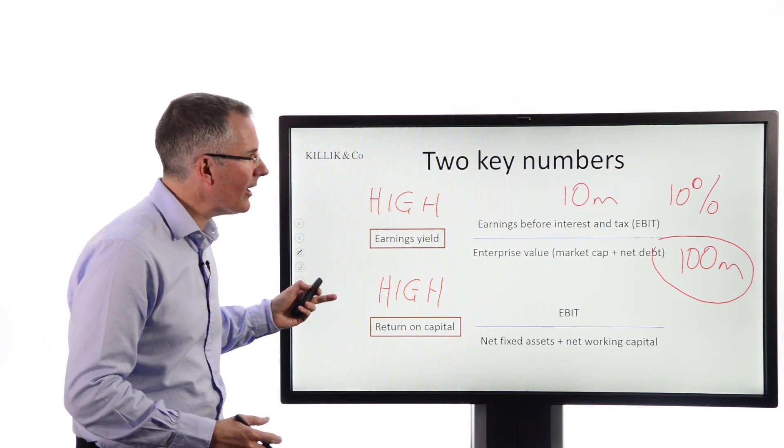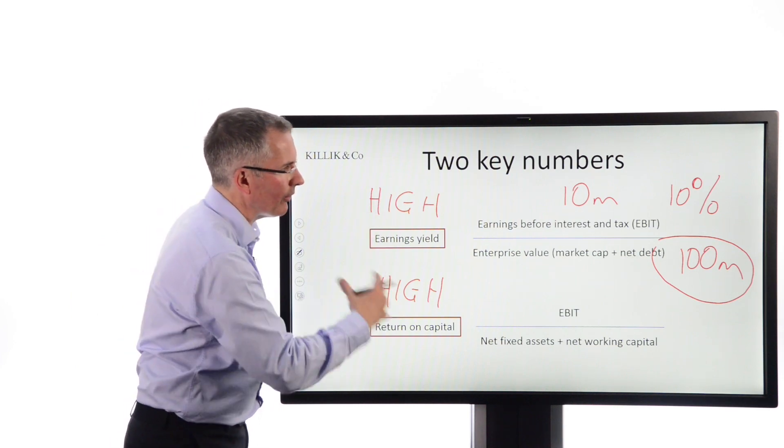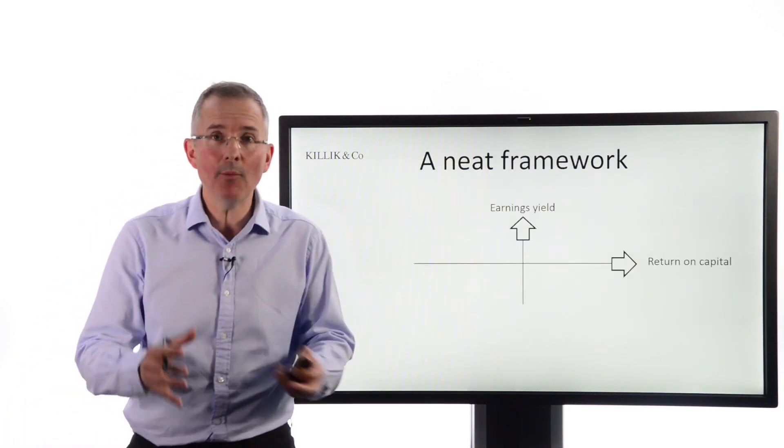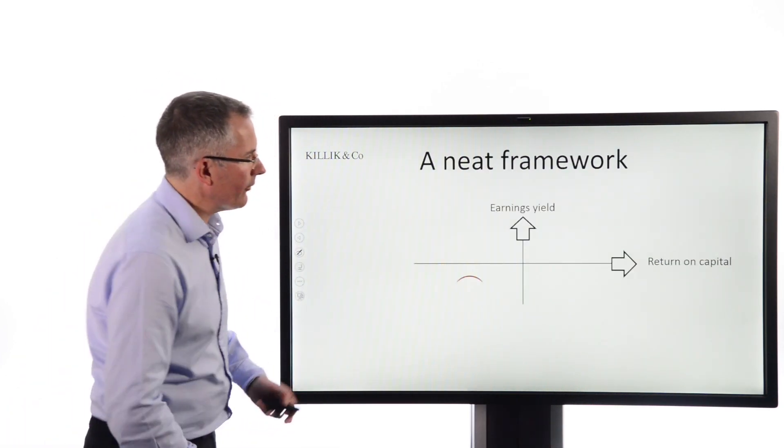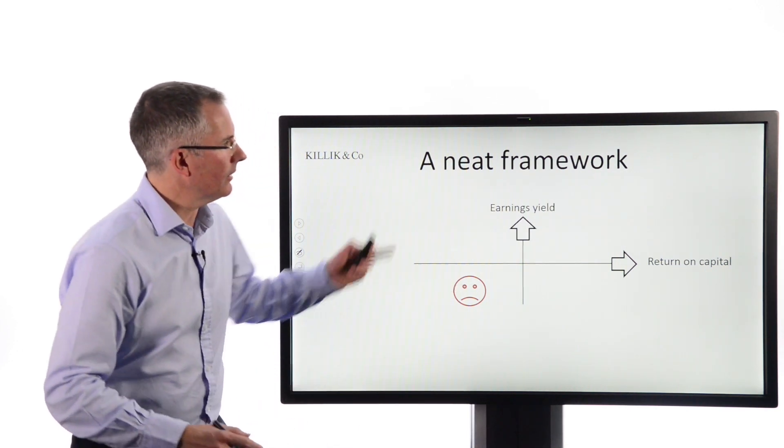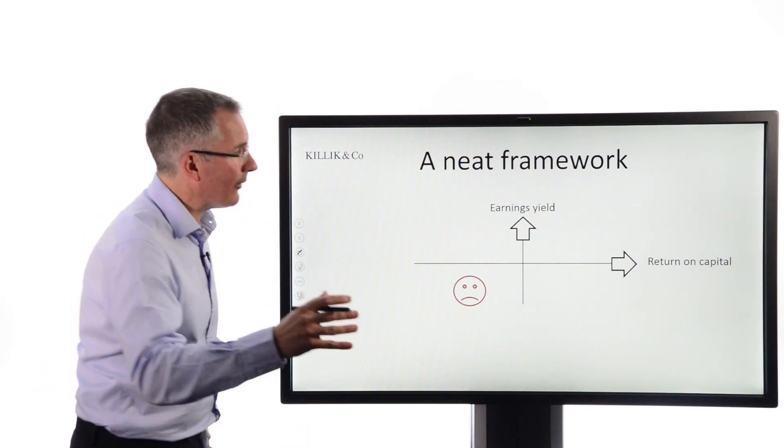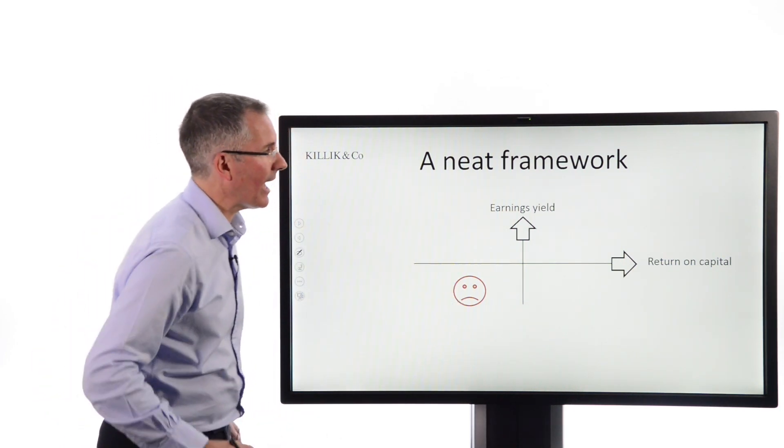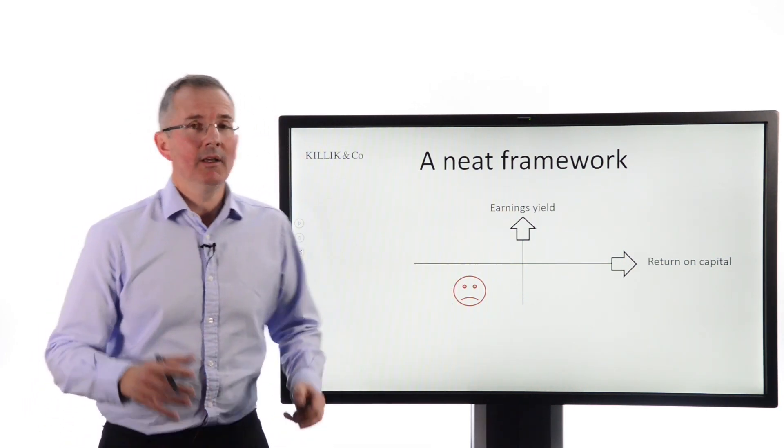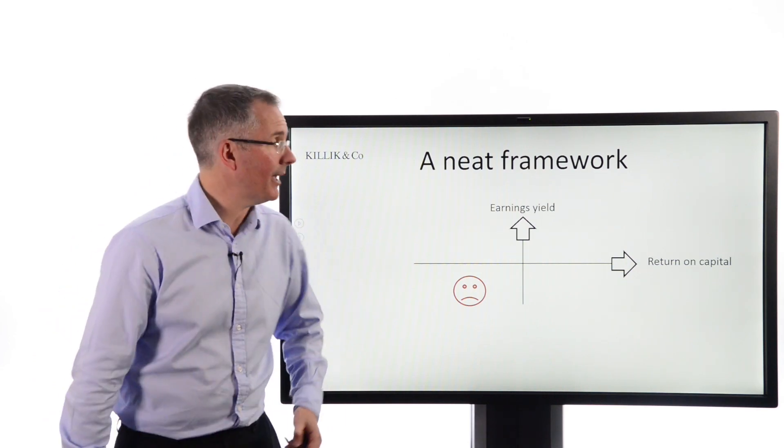So in essence, what he suggested was if you could screen stocks for those two numbers, here be where you want to be heading for. Do you want the stocks that are low return on capital, low earnings yield? No. That's the exact reverse of what we're looking for. That suggests they're not going anywhere, return on capital. And what's more, you're paying quite a bit of money for them. So that's definitely where we don't want to be.